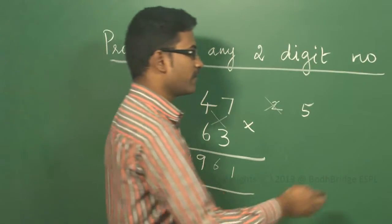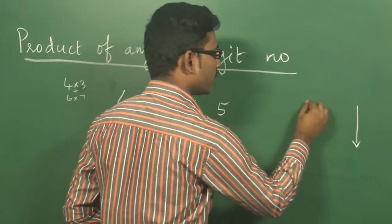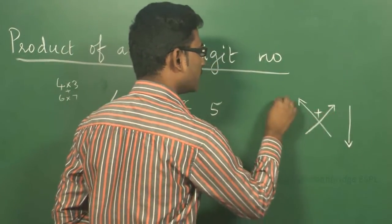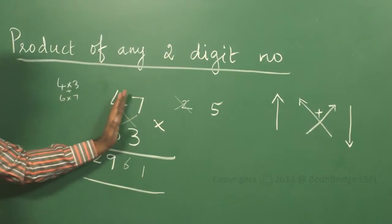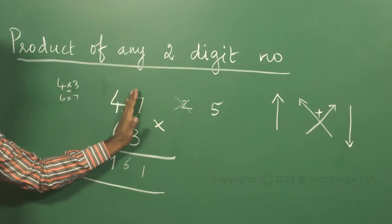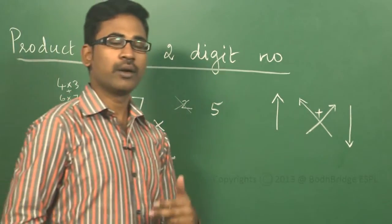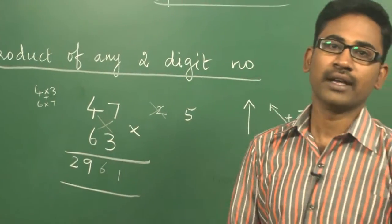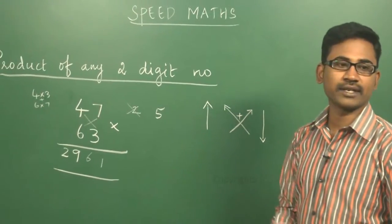The first step is the ones column, then you cross multiply and add, and the last step is the tens column. These three steps — 1, 2, and 3 — you have to follow when making a product of any two-digit number.